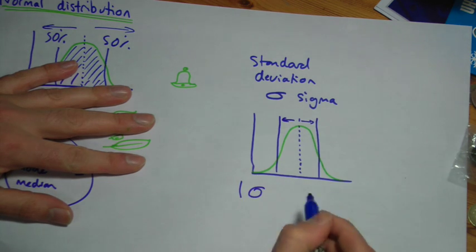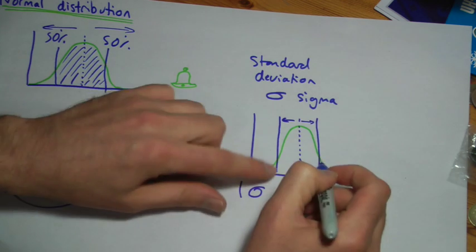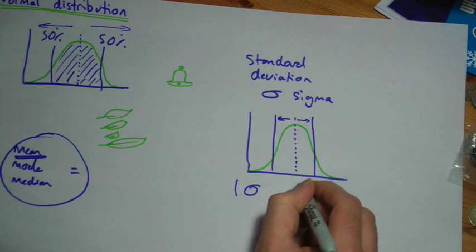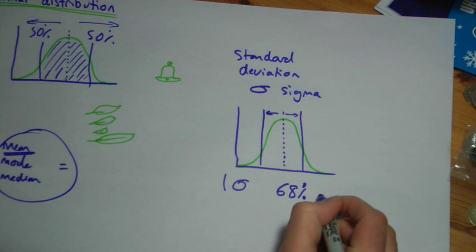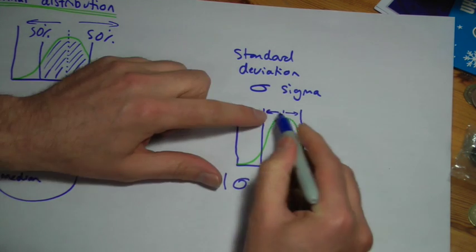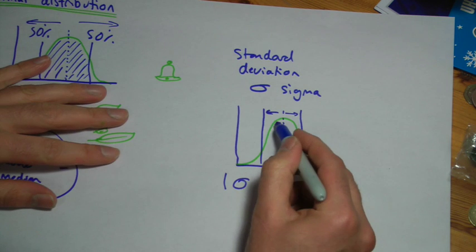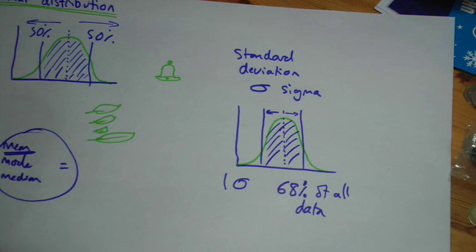One standard deviation either side of the mean, so that bit if you like, contains approximately 68% of all my readings, all of my data falls within one standard deviation either side of the mean. So all of that is 68% of my readings.